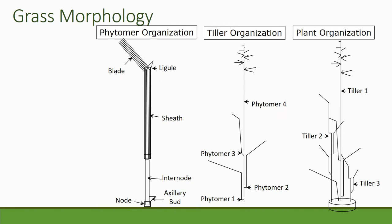Now we'll switch to grass morphology, which is a little bit different — there's some terminology we need to get behind us. On the left, that's the phytomer organization. A phytomer is a group of parts of the plant: the blade plus the sheath, and sometimes at the joint between the blade and the sheath is a ligule — just a little sheath right at the joint, also called the collar. That all wraps around an internode. The internode is the stem or straw of a grass, and those bumps along the stem are the nodes. Right above the node is the axillary bud — those units together create a phytomer.